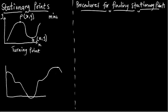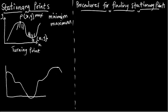A stationary point is either a maximum or a minimum point. Point P is the maximum point because it is the highest peak of the curve, while point Q is the minimum point because it is the lowest point of the curve. We are going to find ways of determining the coordinates of the point where the curve begins to turn.